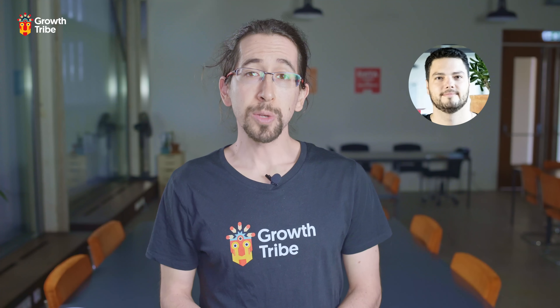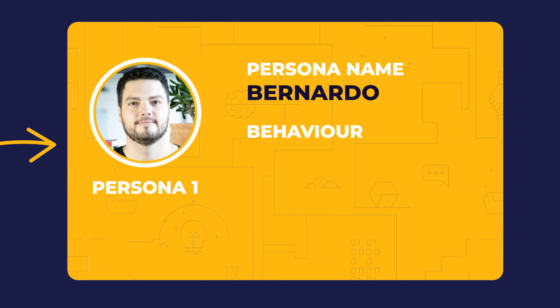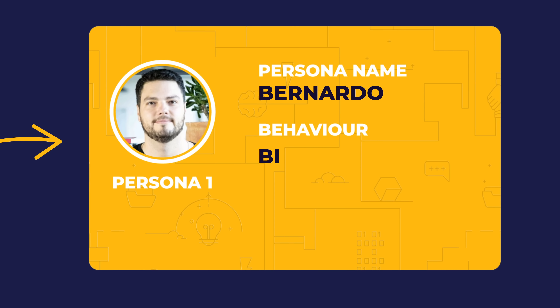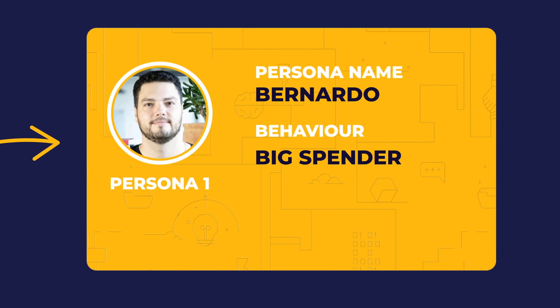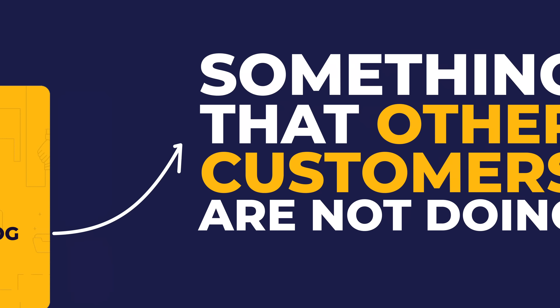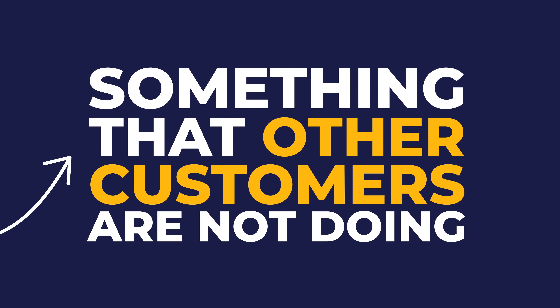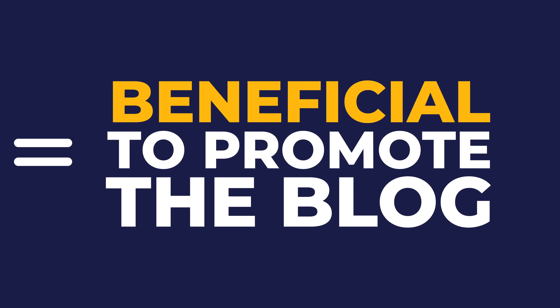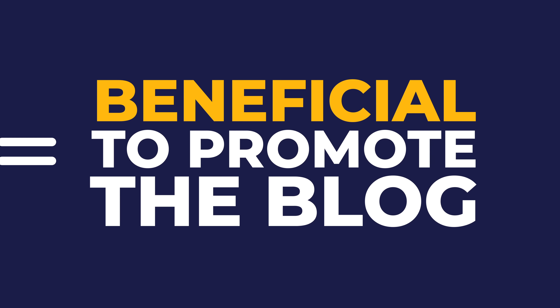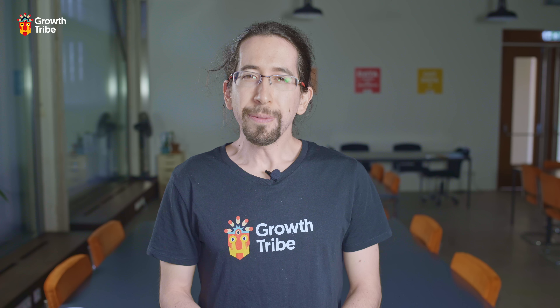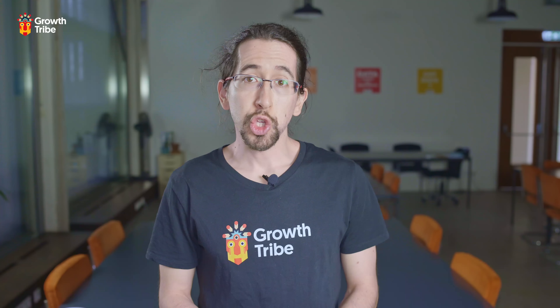Step one: enriching your persona. You've created a persona profile — let's call him Bernardo. You found out Bernardos are big spenders, but you don't know why. When you perform an AI clustering analysis on your behavioral data, you realize that Bernardos are not only big spenders, but also read your blog often, which is something other customers are not doing. This means it's probably beneficial for you to promote this blog.